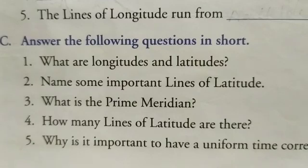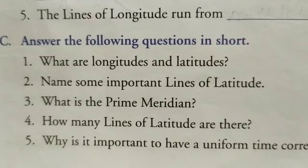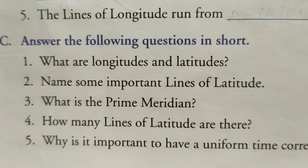After that, in the ruling page on the first line, you will write the chapter's name — Longitude and Latitude. Clear? So after writing the chapter's name, leave two lines and then write Pesanasa number C — Answer the following questions in short — as a heading.